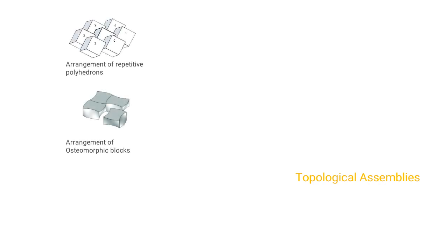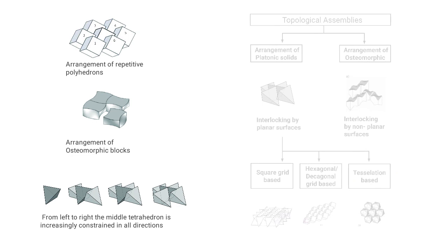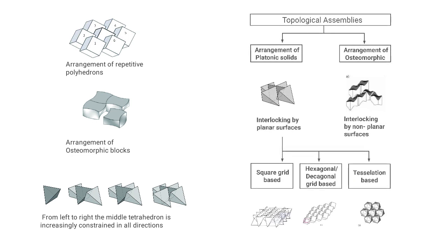Most present in this conference might be aware of topological assemblies. This is a quick run through for those who don't know about it. Topological assemblies are arrangements of kinematically constrained repetitive polyhedrons or osteomorphic blocks. As shown in this figure from left to right, the middle tetrahedron is increasingly constrained in all directions. There are two types of arrangements: arrangement of platonic solids is interlocked within the planar surfaces, while osteomorphic blocks have non-planar interlocking faces.